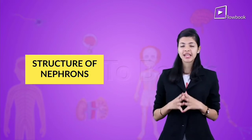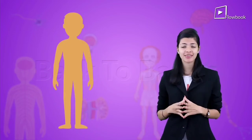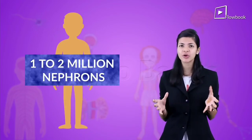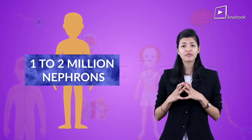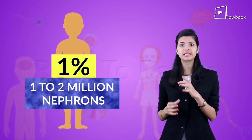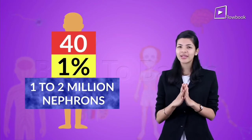Now that we've learnt about the structure of the nephron, let's learn an interesting fact about them. Did you know that your body has around 1 to 2 million nephrons? They also start to fall at a rate of 1% a year from the age of 40. But calm down — there's nothing to worry about, because with age these nephrons tend to enlarge in size.